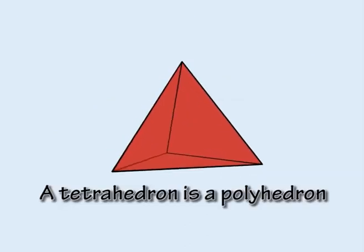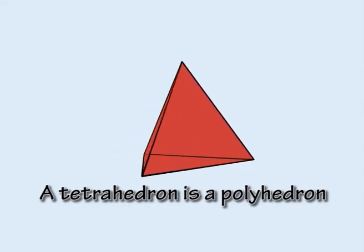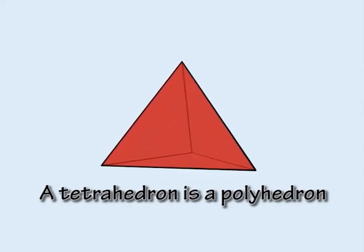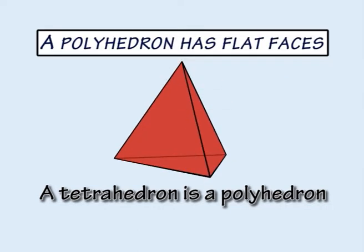Although the tetrahedron may not be the simplest space figure, it has a better claim at being called the simplest polyhedron. A polyhedron is a space figure whose faces are all flat.